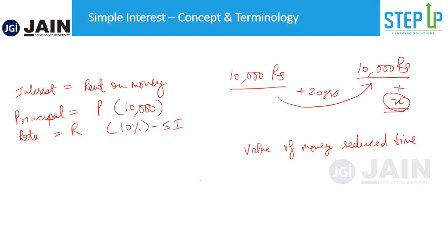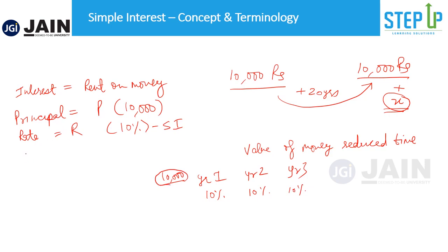Simple interest means every year the rate would be the same. So for example, after year one, you would charge 10% on the 10,000 rupees — that's 1,000 rupees. For year two, you'd charge an additional 10% on the principal. Year three also 10% of the principal. So if principal is P, rate is R, and T is the time period, the formula to calculate simple interest is SI = PRT / 100.